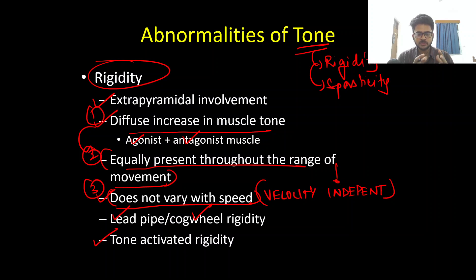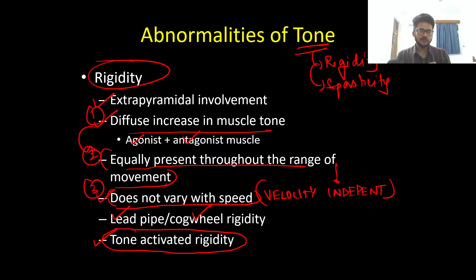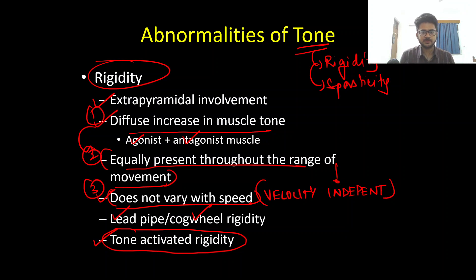Before discussing the types, we need to know about stone-activated rigidity. Sometimes you may strongly suspect extrapyramidal involvement but cannot clinically appreciate much rigidity. In this scenario, you perform stone-activated rigidity: ask the patient to do a voluntary activity on the unaffected side — for example, tap the thigh or draw circles with the opposite hand. This voluntary activity will unmask the rigidity present on the involved side. You should always perform this in suspected extrapyramidal involvement where overt rigidity is not found.